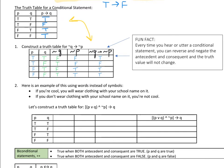Using words instead of symbols: if you're cool, you will wear clothing with your school name on it. If we reverse the antecedent and consequent and negate both, we get: if you don't wear clothing with your school name on it, then you're not cool. Both statements imply the same thing.